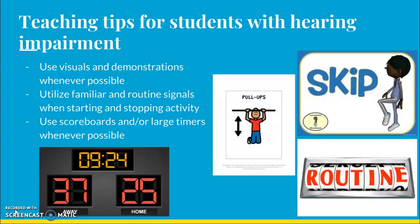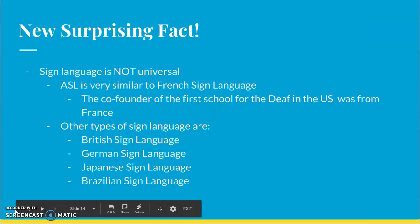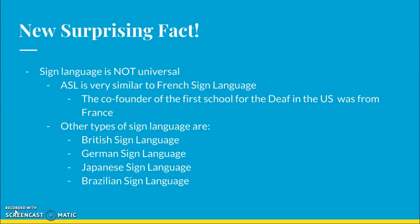It's also important to utilize familiar routines and signals for starting and stopping activities, and try to use scoreboards and large timers when possible for visual reference. Lastly, a surprising fact: sign language is not actually universal. ASL, or American Sign Language, is what we commonly see in America, and it's very similar to French Sign Language due to the founder of the first school for the deaf in the U.S. being from France. Other types of sign language include British, German, Japanese, and Brazilian, each with their own intricacies just like spoken language. Thanks for watching our screencast, and we'll see you in class on Thursday.